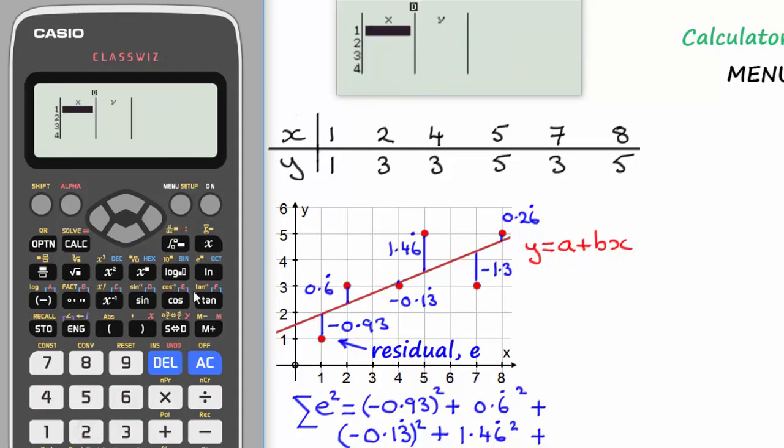So if we select 2, we're now presented with a table and we need to enter our x values as displayed along here. And to do that, we just enter the first one, 1, and then press equals. And you can see it's entered, and we carry on like that, putting the other values in. So it will be 2 equals, then 4 equals, 5 equals, 7 equals, and finally 8 equals.